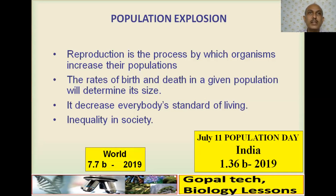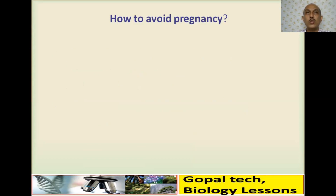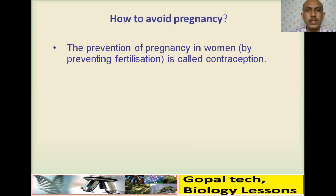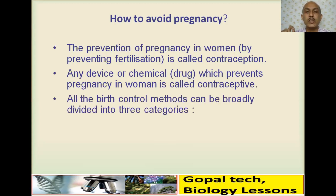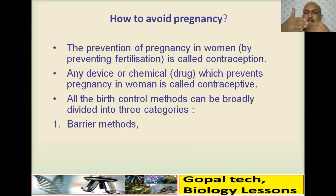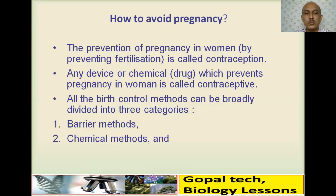To control population explosion or birth rate, we need contraception. Contraception is the prevention of pregnancy by preventing fertilization. Any device, instrument, or chemical that prevents pregnancy is called a contraceptive device. Birth control methods are broadly classified into three categories: barrier methods (a physical barrier between sperm and ova), chemical methods (hormones or chemicals to suppress ovulation or kill sperm), and surgical methods (permanent).